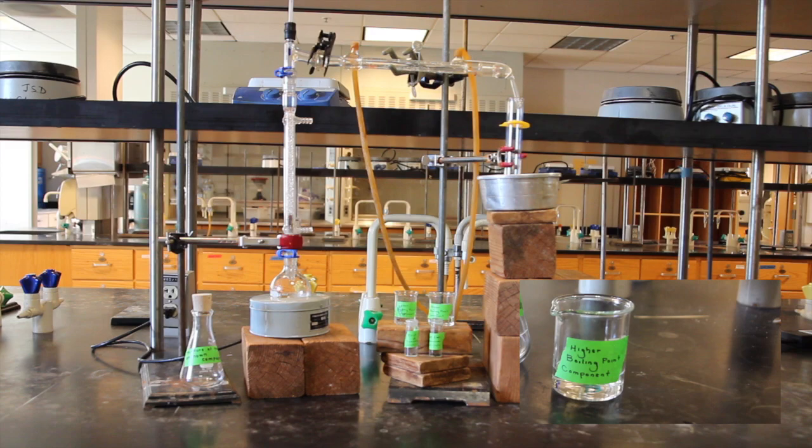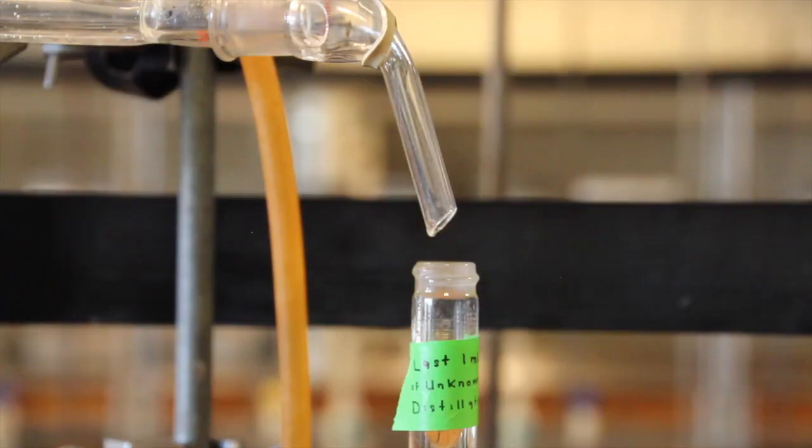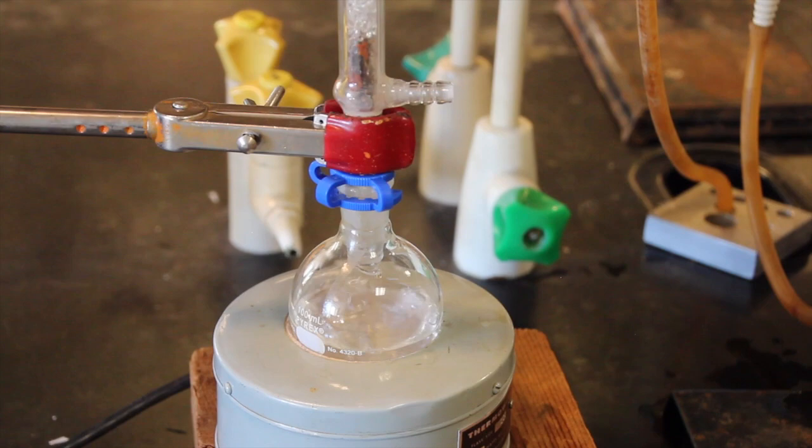Begin emptying the graduated cylinder into a second beaker or flask labeled for the higher boiling component and collect the second distillate until you near the last two milliliters. Collect the last milliliter separately in a labeled conical vial. It is important to always leave some liquid in the bottom of your apparatus and not boil until the round bottom is dry.